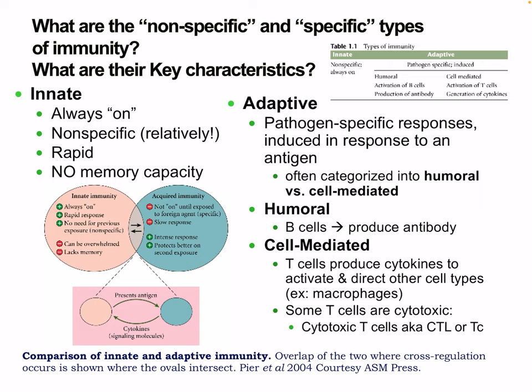In comparison, the adaptive immune system has very pathogen-specific responses. It must encounter the pathogen and it reacts to only one antigen or even epitope. It's often characterized into humoral, using B cells, and cell-mediated, using T cells. B cells produce antibody, and cell-mediated T cells produce cytokines to activate and direct other cell types like macrophages and neutrophils.